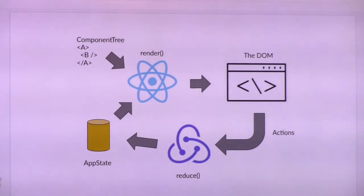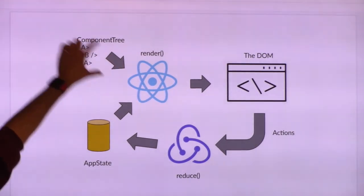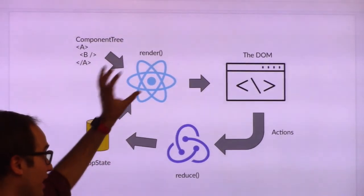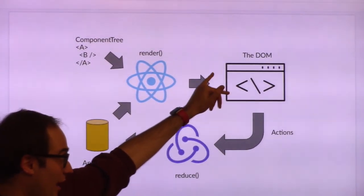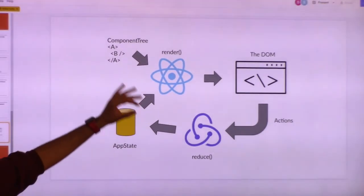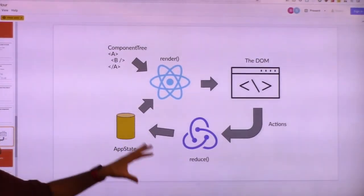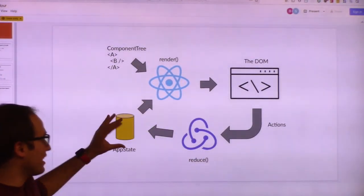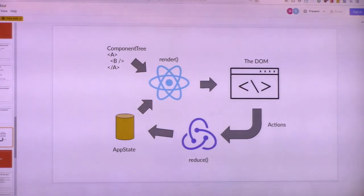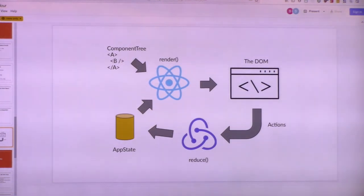Here's the diagram: single point of truth for the app and state come in, React renders it to the browser. The browser generates actions that go back into the reducer function. Redux combines old state and new actions to create a new state, and the cycle continues. It may seem complicated, but it solves a bunch of problems that arise in really complex applications.